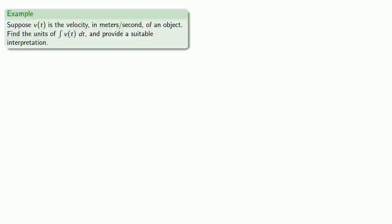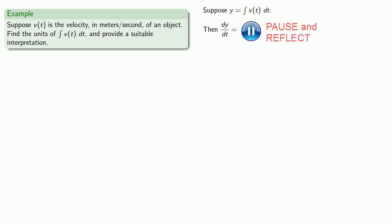For example, suppose v of t is the velocity in meters per second of an object. Let's find the units of the antiderivative of v of t and provide a suitable interpretation. So let y be the antiderivative of v of t. Then the derivative of y with respect to t will be v of t.